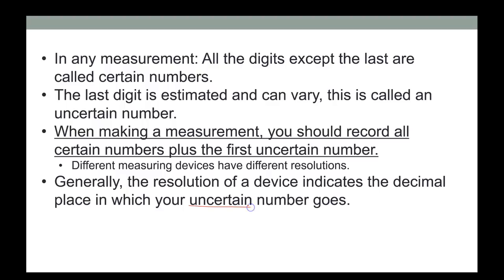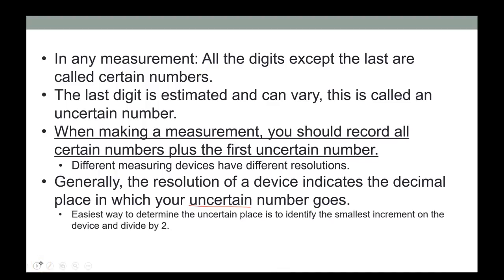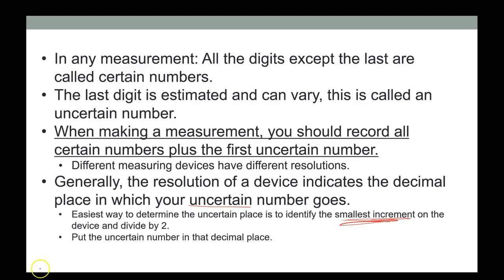The resolution tells you where to put the uncertain number — which decimal place must have a digit. It's an estimate and doesn't have to be perfectly right, but it must be there. The easiest way to find the resolution is to identify the smallest increment on the device and divide it by two — that's where you put your last digit.